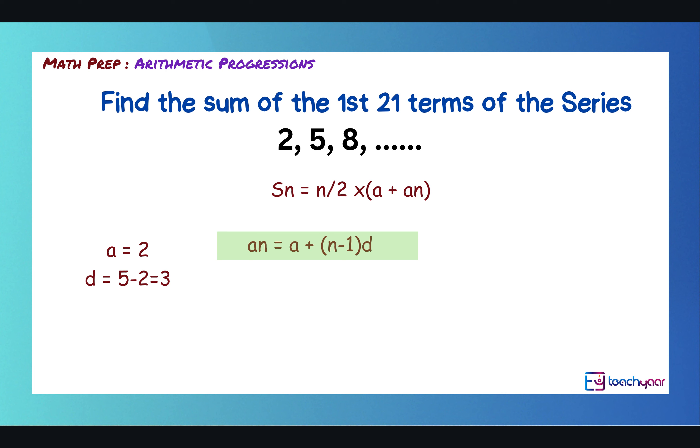Now, first we need to find the nth term. So, we need to find the 21st term. So, using the formula an is a + (n-1)d, a21 is a, which is 2, plus 21 minus 1 is 20 times 3, which is the common difference. So, 20 times 3 is 60. 60 plus 2 is 62.